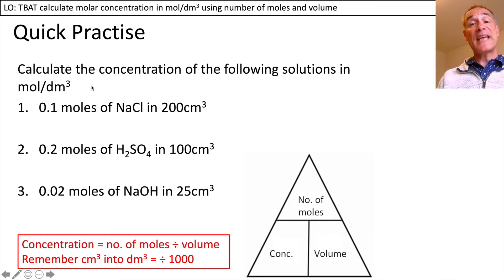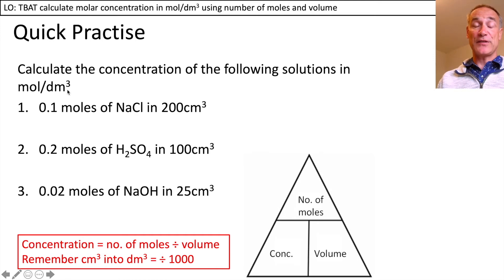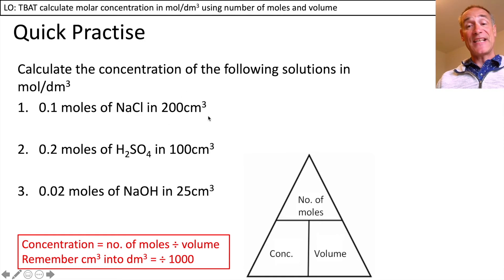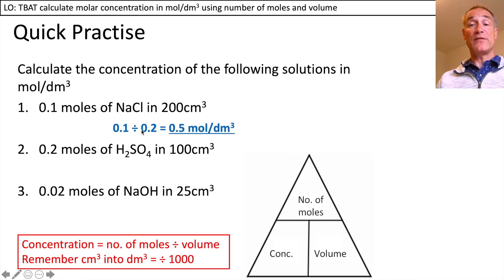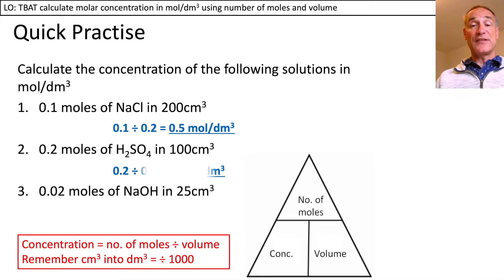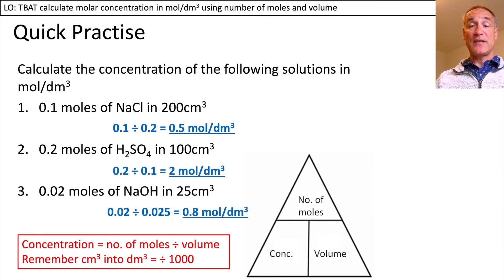Calculate the concentration of the following solutions in moles per decimetre cubed. I'll do the first one for you. We've got 0.1 moles in centimetres cubed, so I need to divide by a thousand, which gives 0.2 decimetres cubed. So that's 0.1 divided by 0.2, which is 0.5 moles per decimetre cubed. Pause the video and have a go at the other two. You should have got 2 moles per decimetre cubed and 0.8 moles per decimetre cubed.